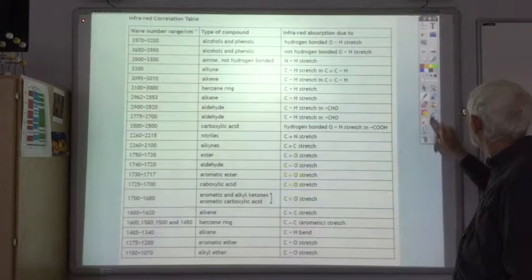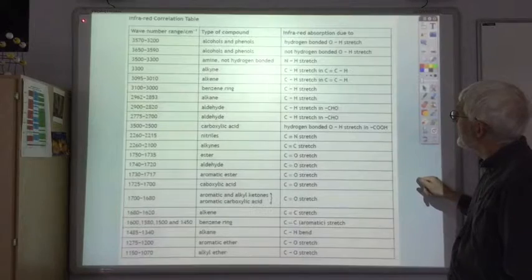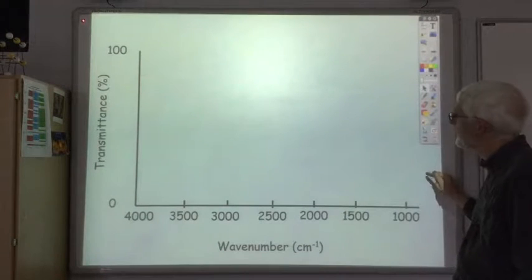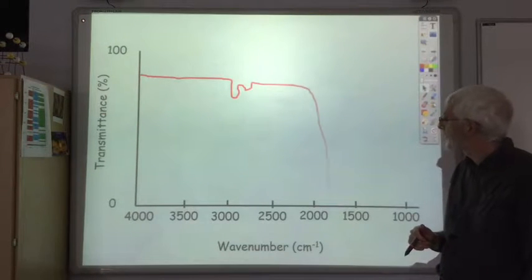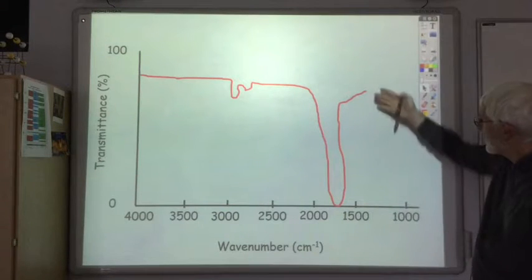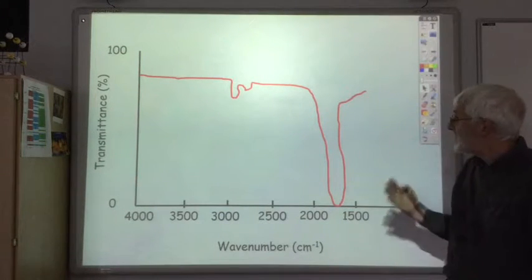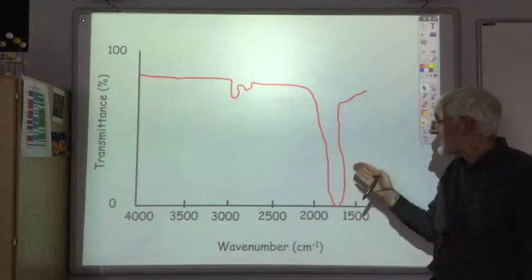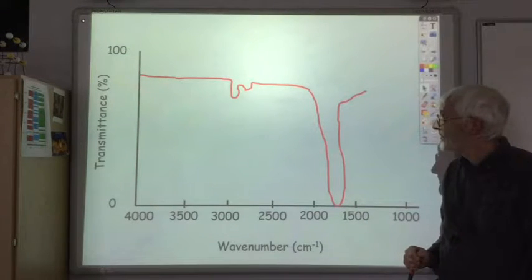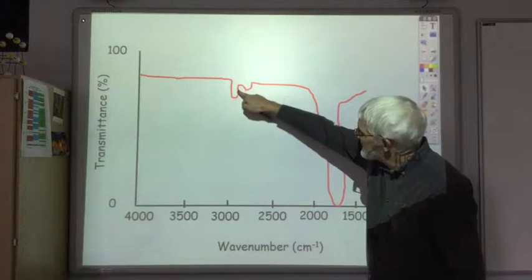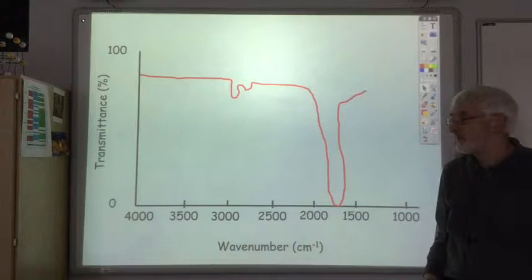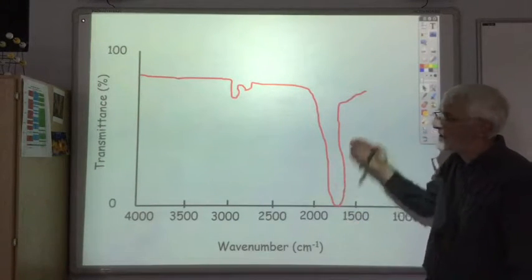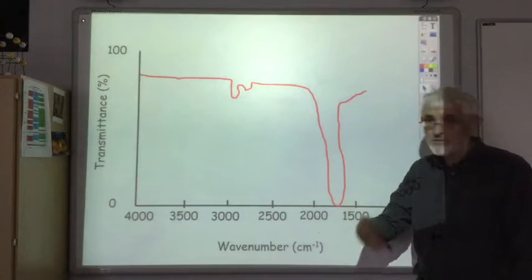Let's look at some spectra — first, some that I've roughly hand-drawn to simplify them. I haven't bothered showing anything below 1400. The main feature is a big absorption round about 1700, so there's going to be a C double bond O in this molecule. This little bit of noise just below 3000 is just due to CH bonds. There's no sign of any OHs, so it's not a carboxyl group, but we've got a C=O — so it might be an aldehyde, a ketone, or an ester.